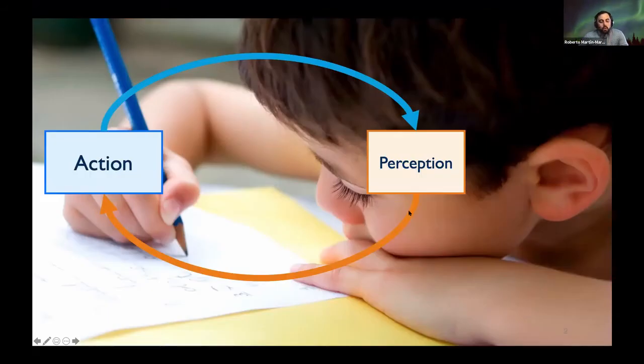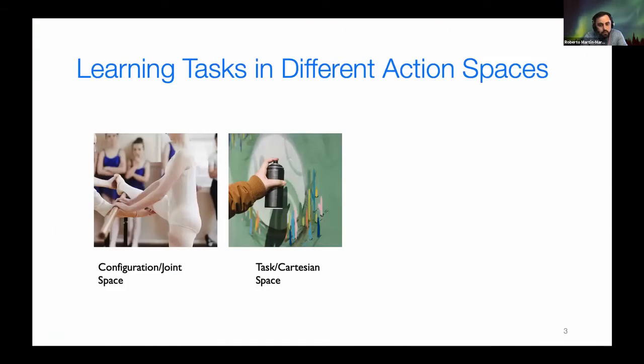The idea is that when we learn new tasks, we connect sensory inputs to actions to try to create sensory motor loops. These loops are, however, not always learned in the same action space. Sometimes some tasks are better learned in joint space and motion of your body. Some others are easier to define, for example, in Cartesian or in task space, which is something that is very intuitive in robotics, but maybe not so much in other disciplines.